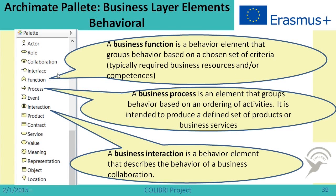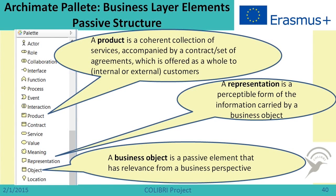Among behavioral elements, we have business function, which groups behavior based on a chosen set of criteria. Then there is business process, which shows the ordering of activities. There is also business interaction, which are activities performed by several performers. At the end of the business layer elements, there are passive structure elements like products. A product is interesting because it can include many different other things, like services and documents.